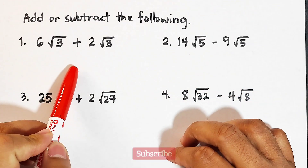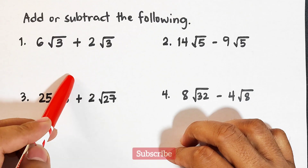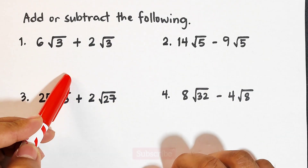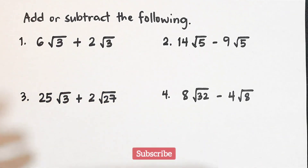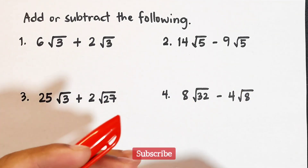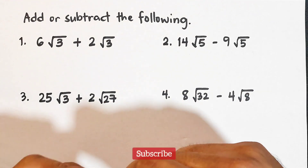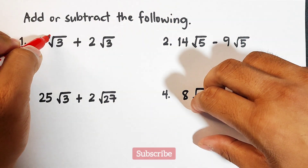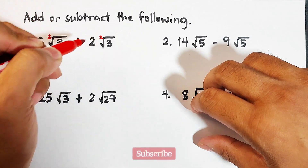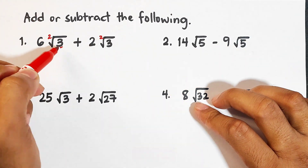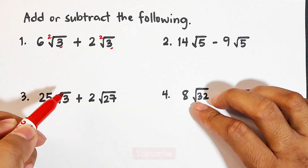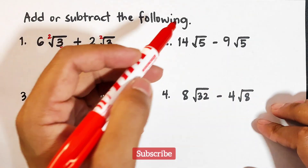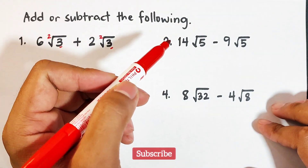Before we start, let me give you the basic rules on how to add radical expressions. To add radical expressions, we need to have the same radicals. They must have the same index — the number outside the radical sign — and the same radicand, or the number inside the radical sign.